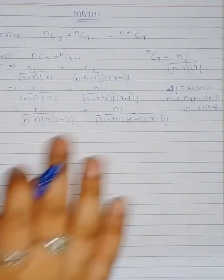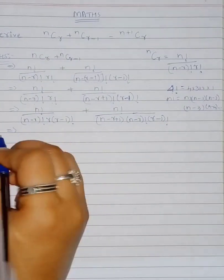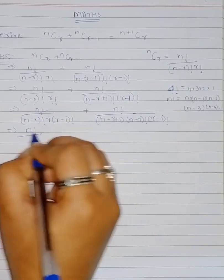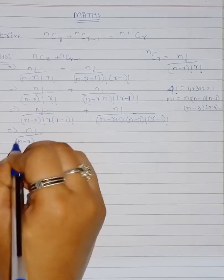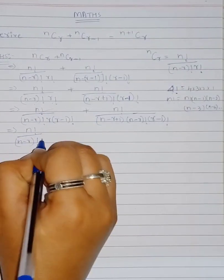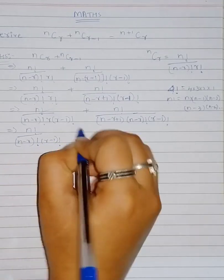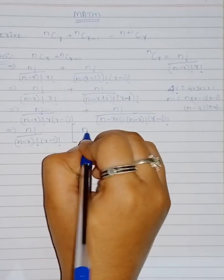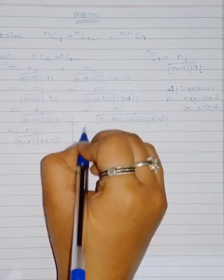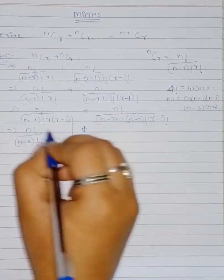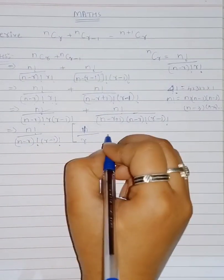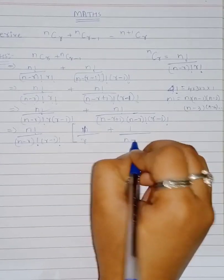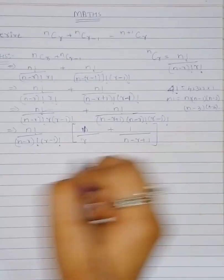Using this, let us see what terms are common. n! is common, (n−r)! is common, and (r−1)! is also common. Taking these out, the remaining terms inside the bracket are 1/r from the first term and 1/(n−r+1) from the second term.